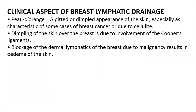This is important because a condition called peau d'orange can develop if the lymphatic system of the breast is blocked. Peau d'orange means the breast surface appears pitted, like the skin of an orange. If the breast also starts to develop dimples, that means Cooper's ligament is involved. This condition can be present in breast cancer, inflammatory conditions, or cellulitis.